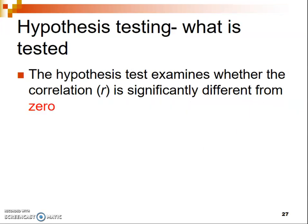So what is the hypothesis test actually testing? It's testing the R statistic — the actual value of R associated with your data set. It's examining whether or not your correlation, that value of R from your data set, is significantly different from zero. When we have a zero correlation, that means there is no relationship between our two variables. So our hypothesis test examines if the obtained correlation is significantly different from zero or not.